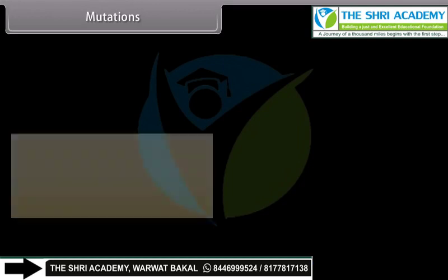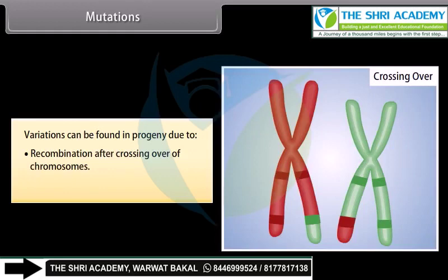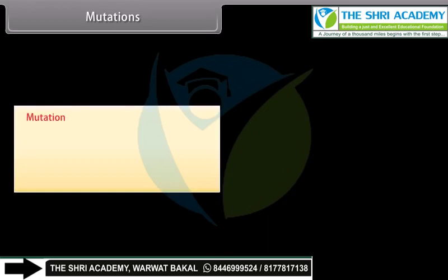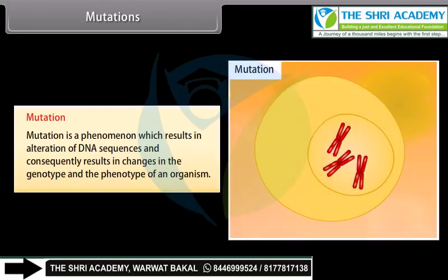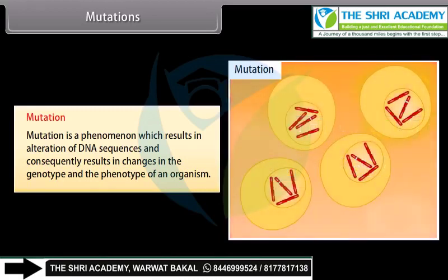Mutations: Variations can be found in progeny due to recombinations after crossing over of chromosomes, and mutations. Mutation is a phenomenon which results in alteration of DNA sequences and consequently results in changes in the genotype and phenotype of an organism.